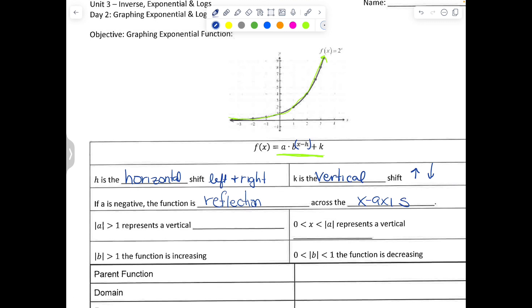And if the absolute value of a is greater than 1, it represents a vertical stretch. And if the absolute value is between 0 and 1, if it's a fraction less than 1, then it's going to be a vertical shrink.